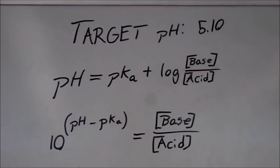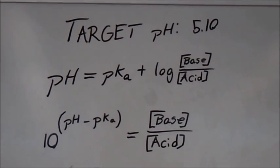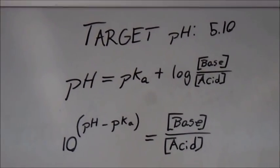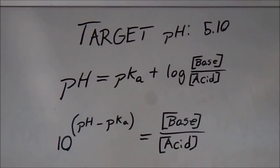For part 4 of this experiment, you are required to manufacture a buffer solution to a target pH given by your TA. To do this, use the Henderson-Hasselbalch equation to determine the needed ratio of base to acid.